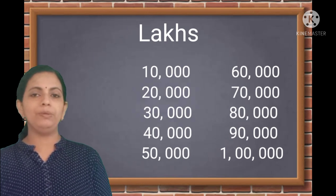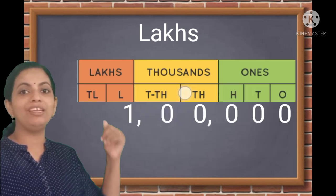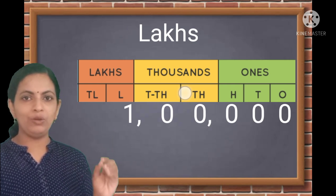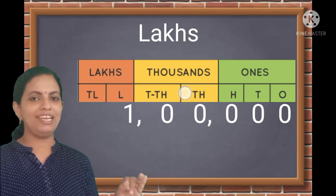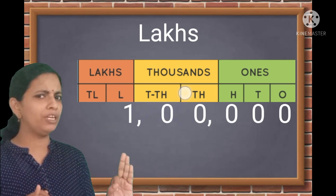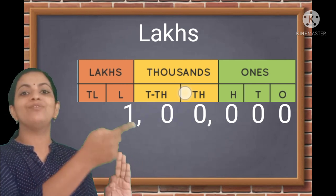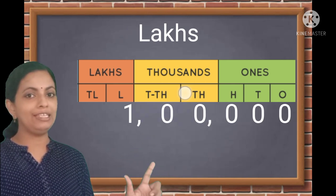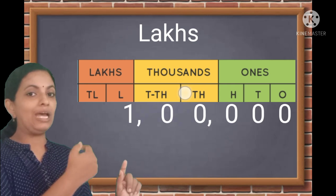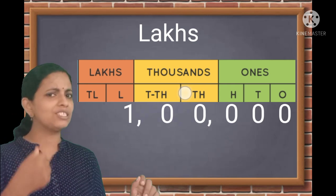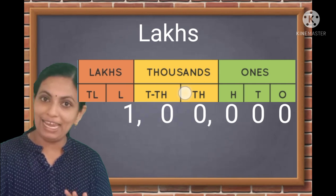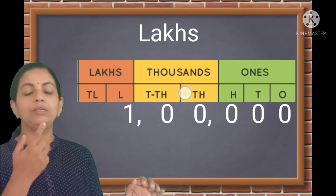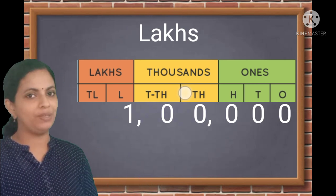So how can we read this number? For reading this number, we need the places, so we will write the places on the top. We know the places: ones, tens, hundreds — and that belongs to the ones period. Then the next two places, thousands and ten-thousands, together form the thousands period. The next two places form the lakhs period.